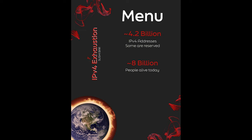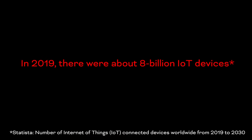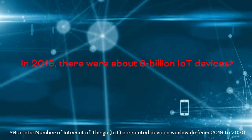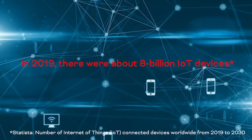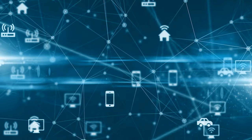We have phones, PCs, laptops, tablets, TVs, and other devices — and that's on top of all the infrastructure devices like routers, switches, and servers. There were 10 million devices connected to the internet as of 2014. And we now have a technology called IoT, or Internet of Things, which dramatically changes the number of connected devices. In 2019, there were nearly 8 billion IoT devices connected to the internet, with a prediction of 16 billion by 2025.